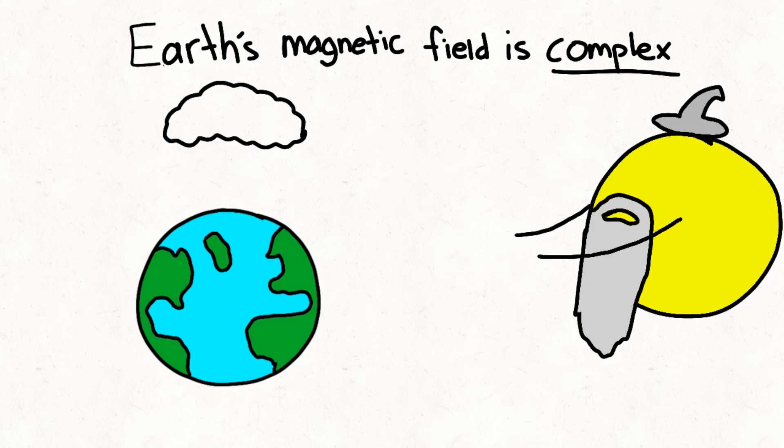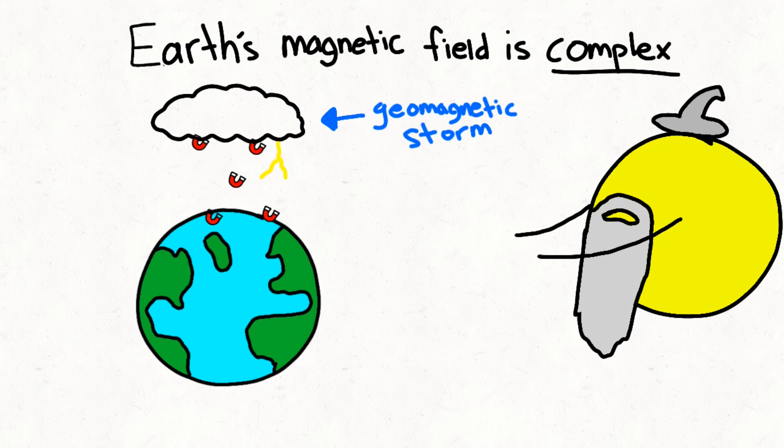Some natural events like geomagnetic storms caused by eruptions of solar wind or solar flares from the Sun can cause a temporary but drastic disturbance to the Earth's magnetic field.